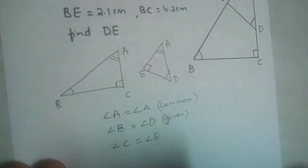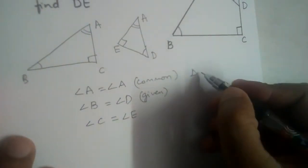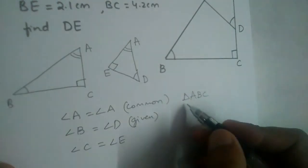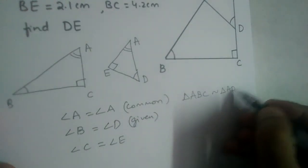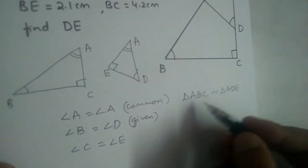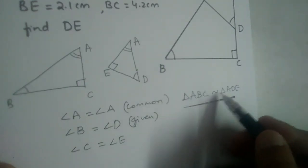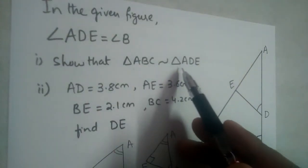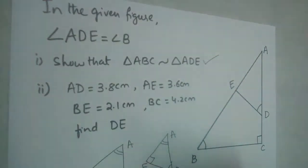Angle C equals angle E, which is 90 degrees. So what do we conclude? Triangle ABC is similar to triangle ADE. This is the symbolic form. We needed to prove that triangle ABC is similar to triangle ADE, so the first part is done.